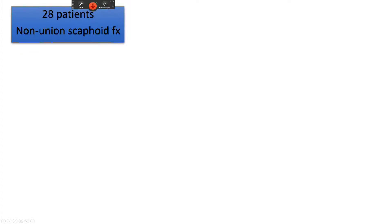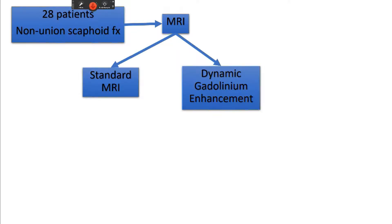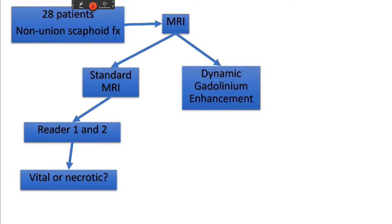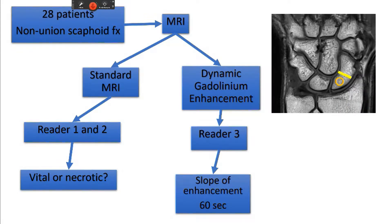This study was a retrospective study with 28 patients, all pretty young with a mean age of 24 years, and all had a known non-union of the scaphoid after a fracture. They all underwent surgery and were scanned with dynamic gadolinium-enhanced MRI preoperatively — meaning 40 consecutive coronal T1-weighted images over a time period of 60 seconds. This was performed in addition to a standard protocol with late enhancement of gadolinium. Two readers assessed the proximal scaphoid fragment on the standard protocol and a third reader measured the slope of gadolinium enhancement in the dynamic sequence in the proximal pole.